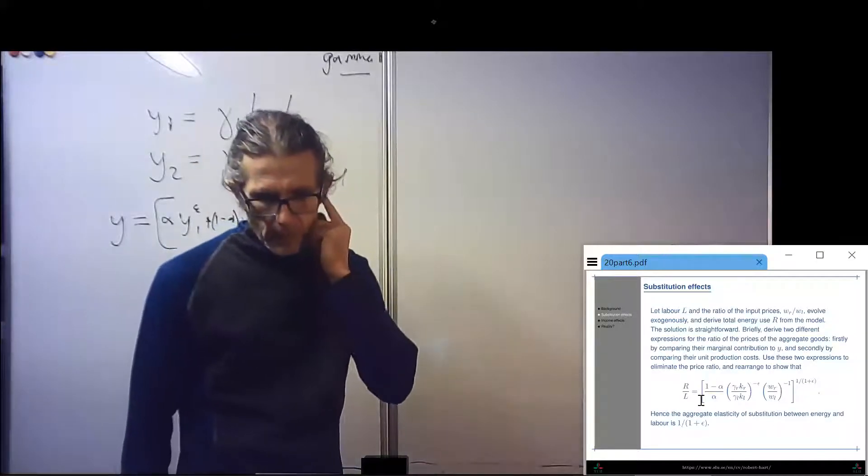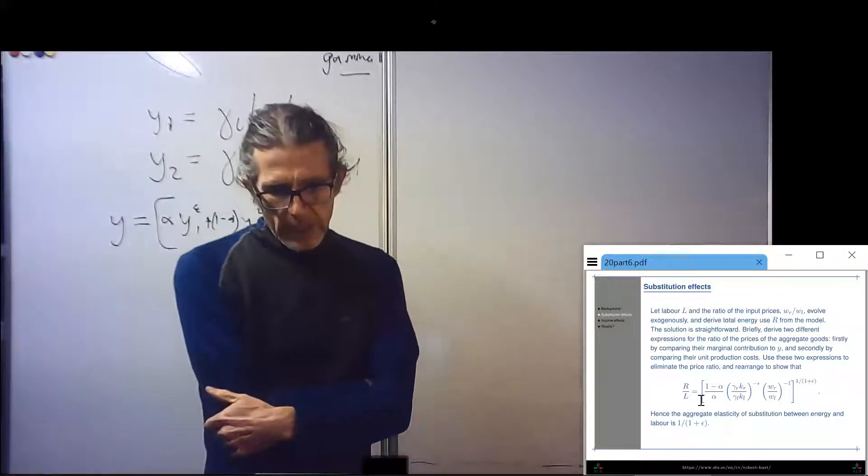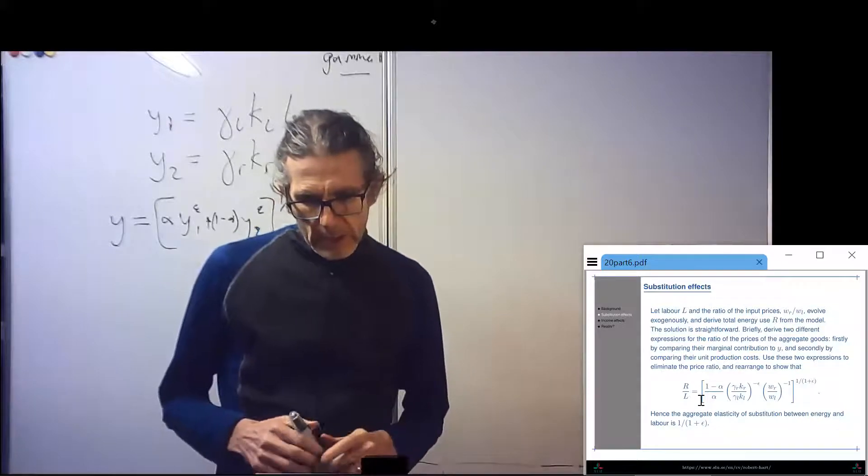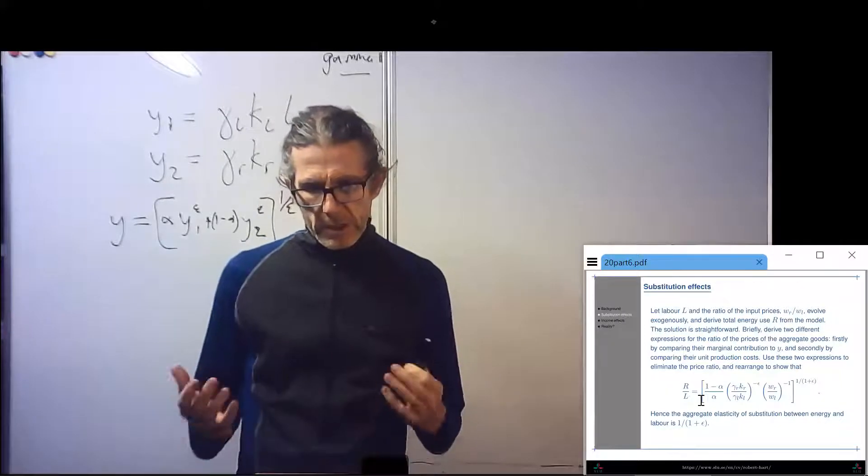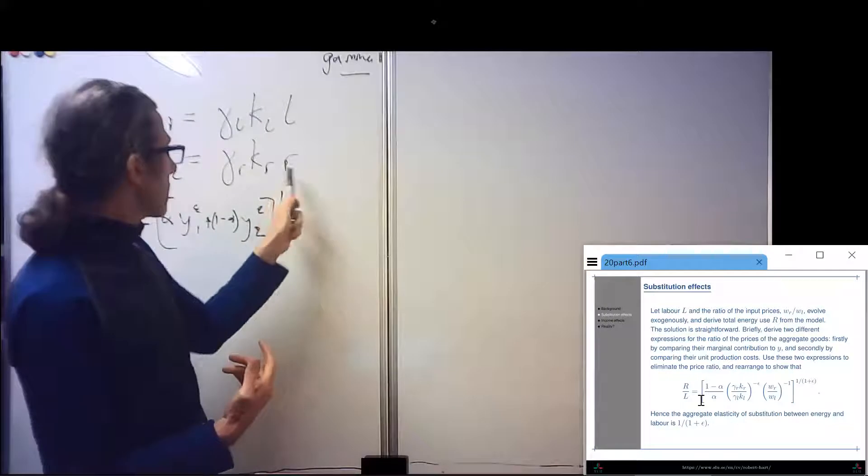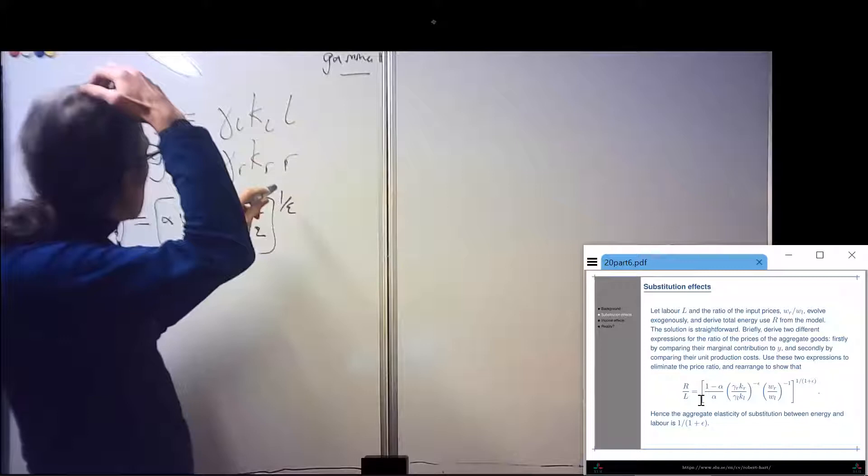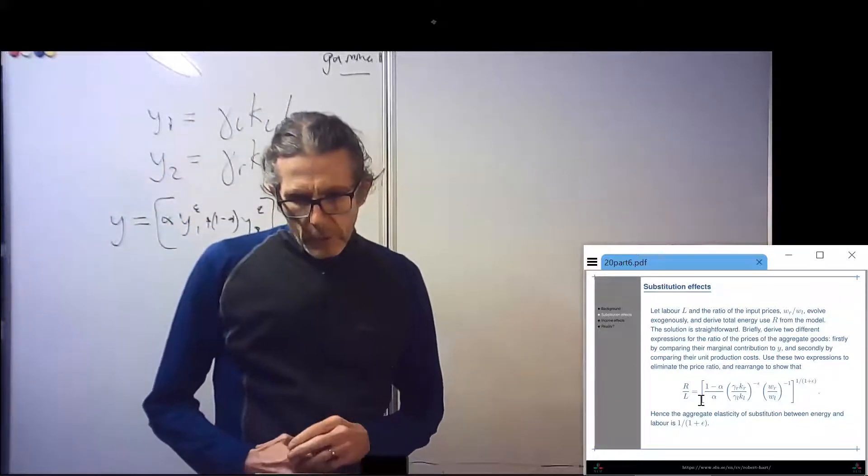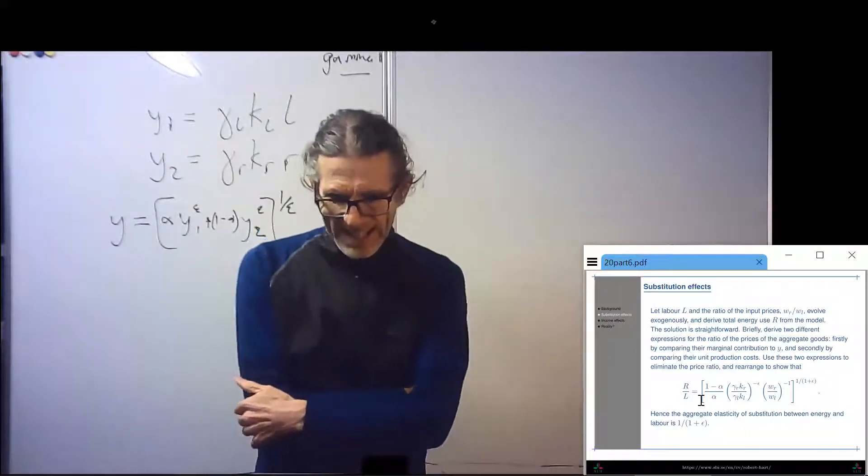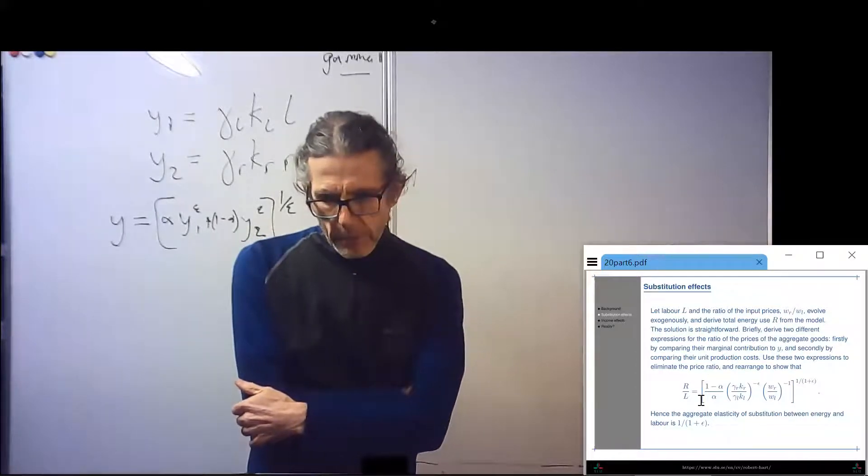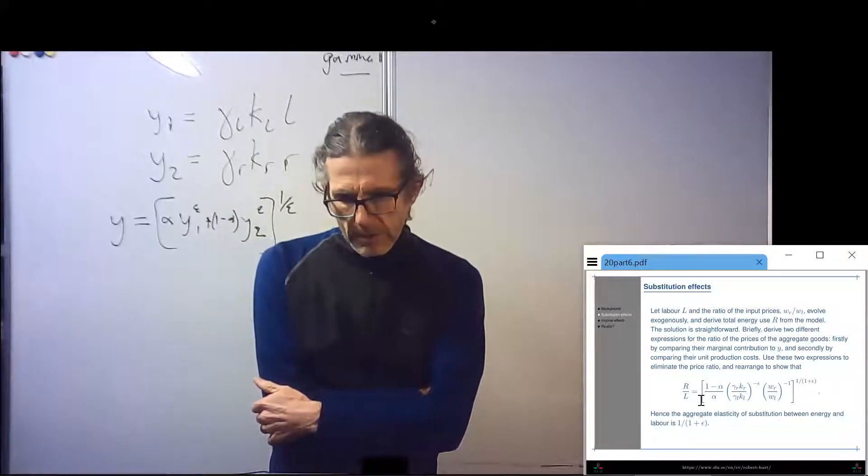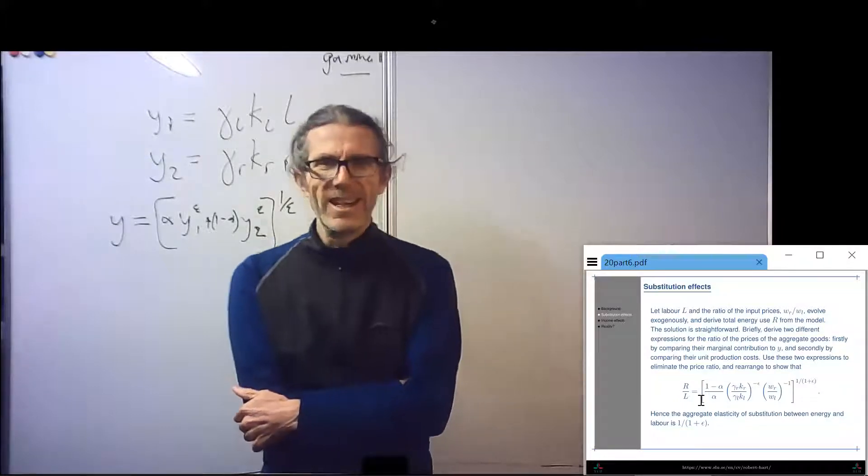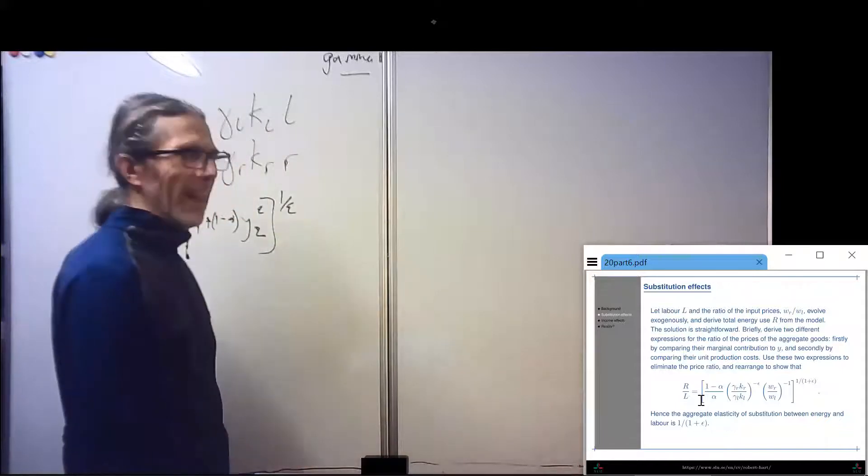Let's keep going. So now let's assume that labor at big L, which is the same as little L in the end, and the ratio of the input prices WR to WL evolve exogenously. And the endogenous thing is total energy use R. So energy gets sucked in due to changes in L, WL, and WR. This is pretty straightforward. I've got to do this without any help.